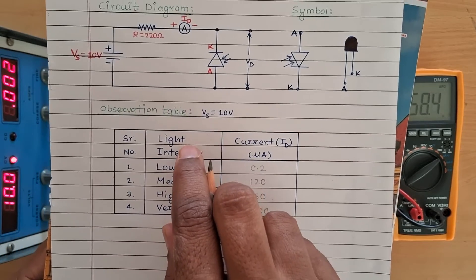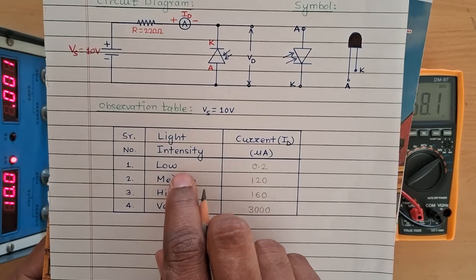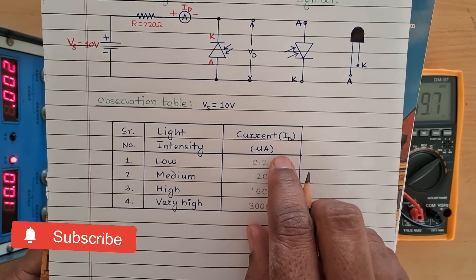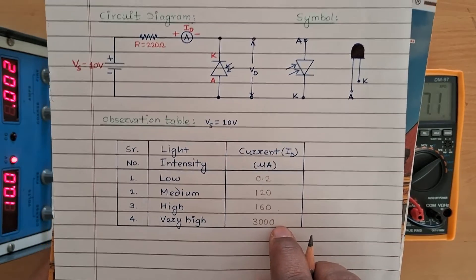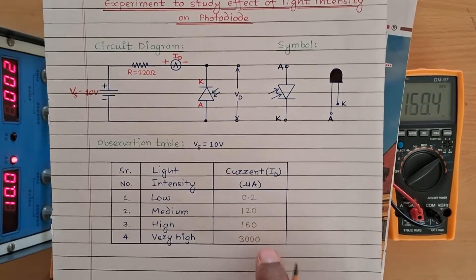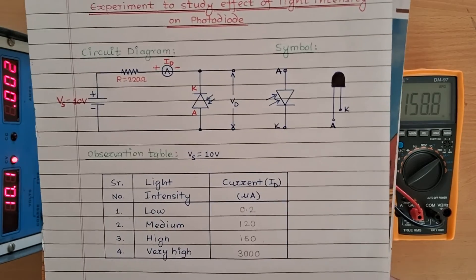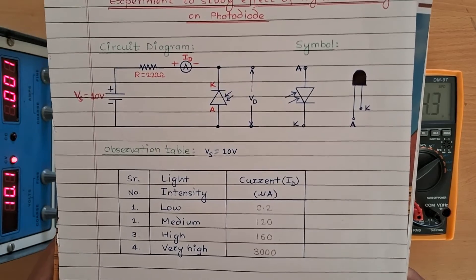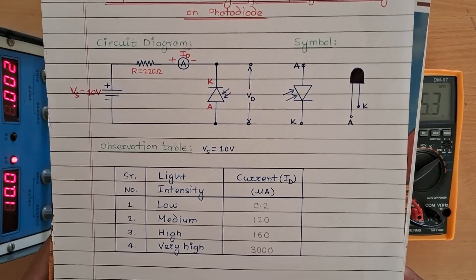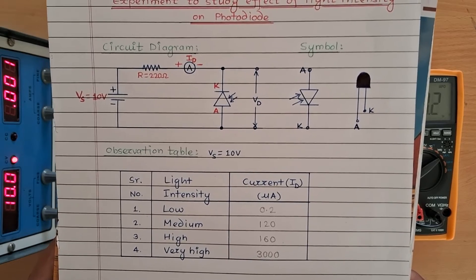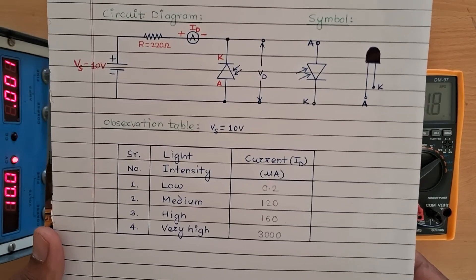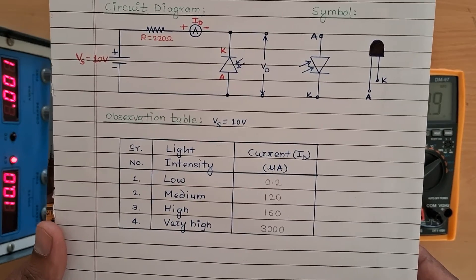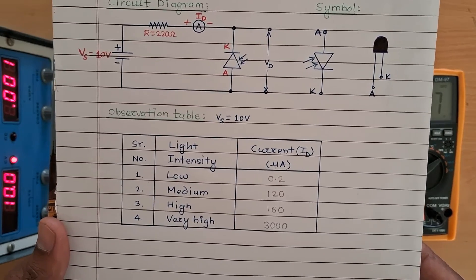So we can conclude that if intensity of light goes on increasing, the value of current flowing through the photodiode will also go on increasing. Due to this property, the photodiode is generally used as a light sensor in cameras and other optical equipment.